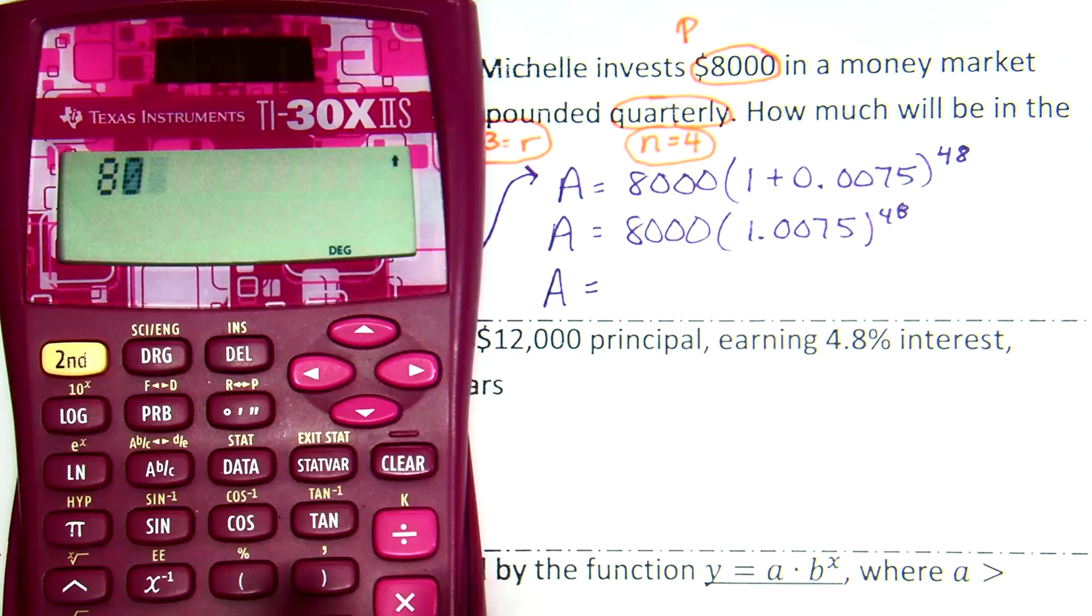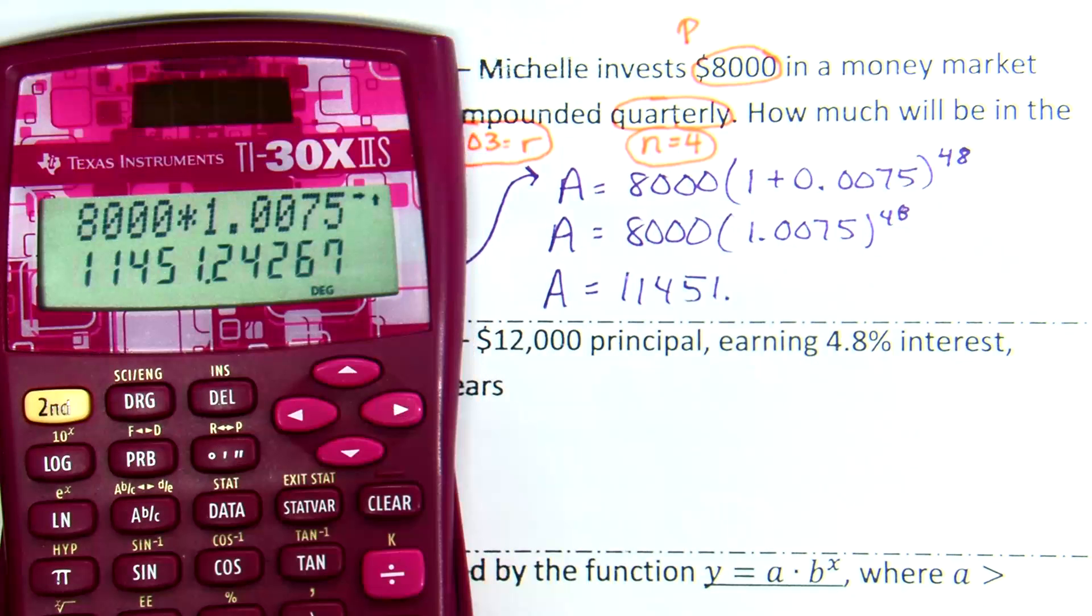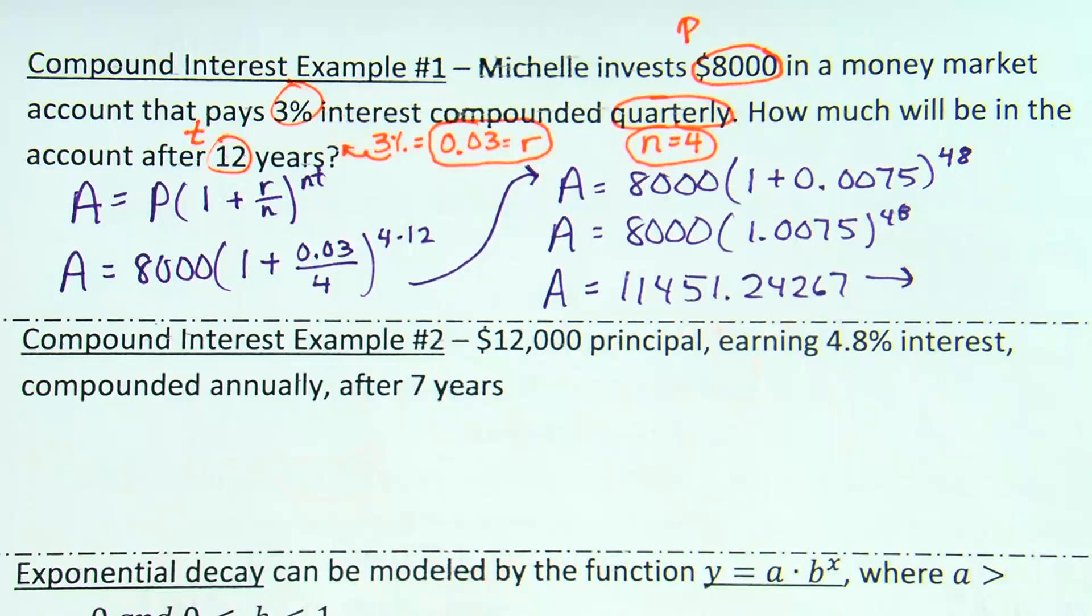8,000 times 1.0075 raised to the 48th. Let's see if your answer matches my answer. 11,451.24267.